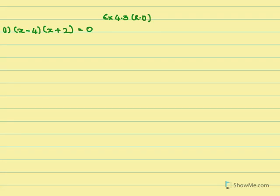We get on to exercise 4.3. The first sum is (x minus 4)(x plus 2), which we need to factorize. First we open the bracket: we multiply x by (x plus 2), this entire bracket, minus 4 into (x plus 2) equals 0.